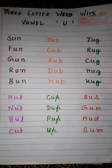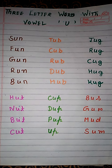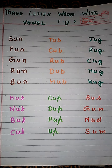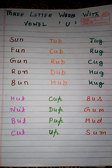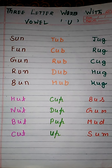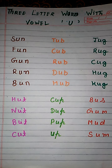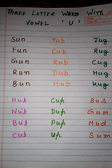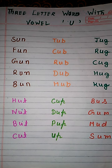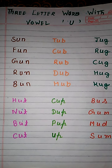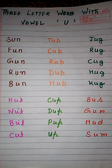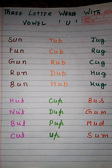Hello dear student, how are you? I hope you are all safe and healthy at your home with your family. We have learned vowel A, E, I, O in the previous video. Now we will read the sound of the U vowel. Its sound is 'uh'. U says 'uh'. U sound is 'uh'.